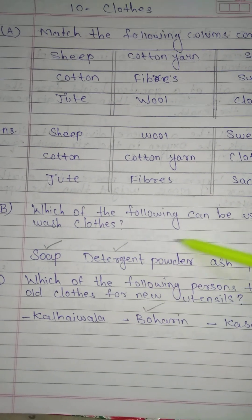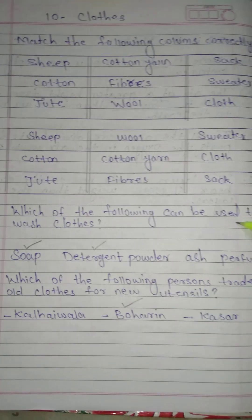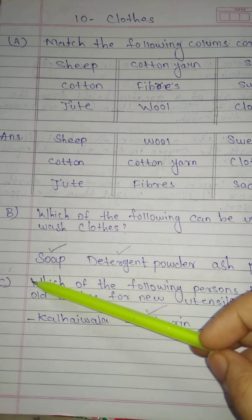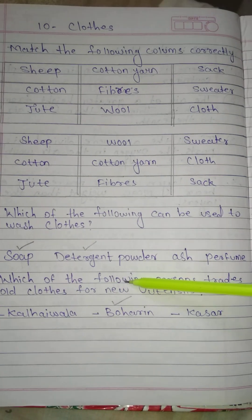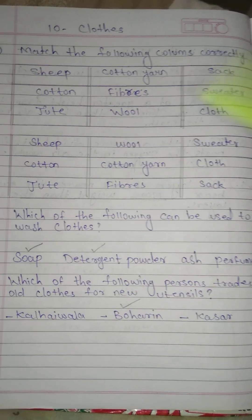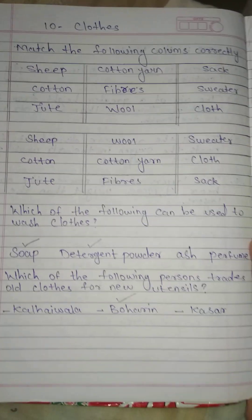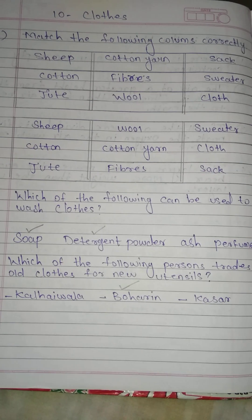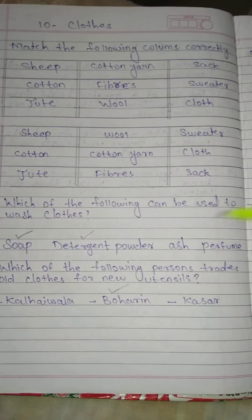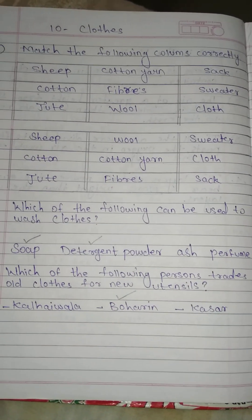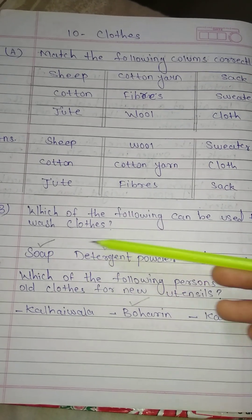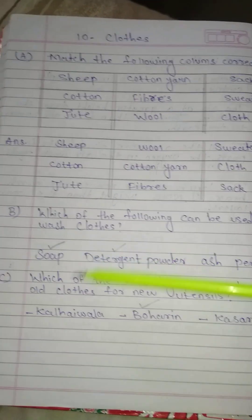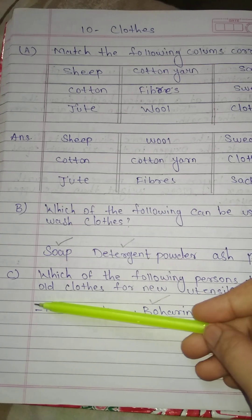B. Which of the following can be used to wash clothes? Answer: here you will find the photos in the textbook — soap, detergent powder, ash, and perfume. The correct answer is soap and detergent powder. We have to tick mark those.